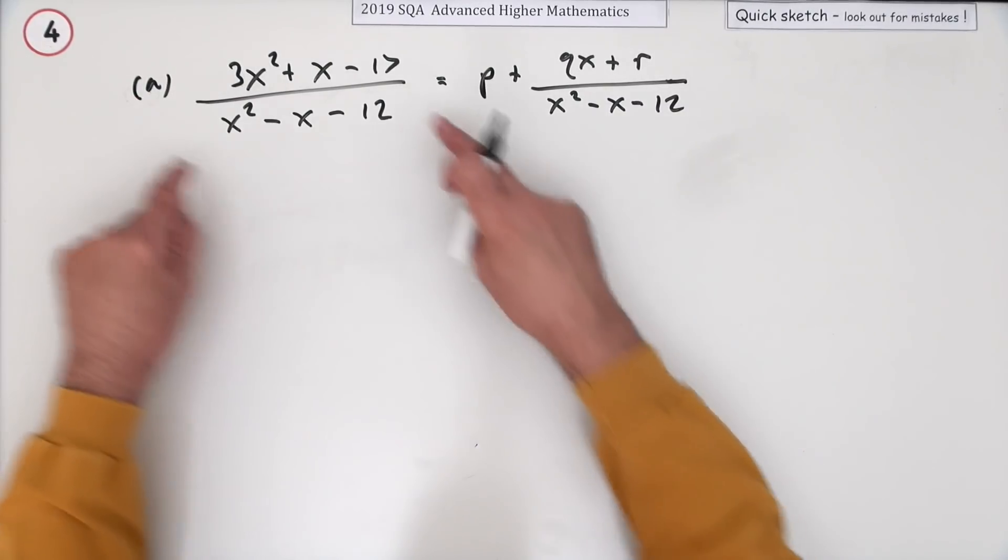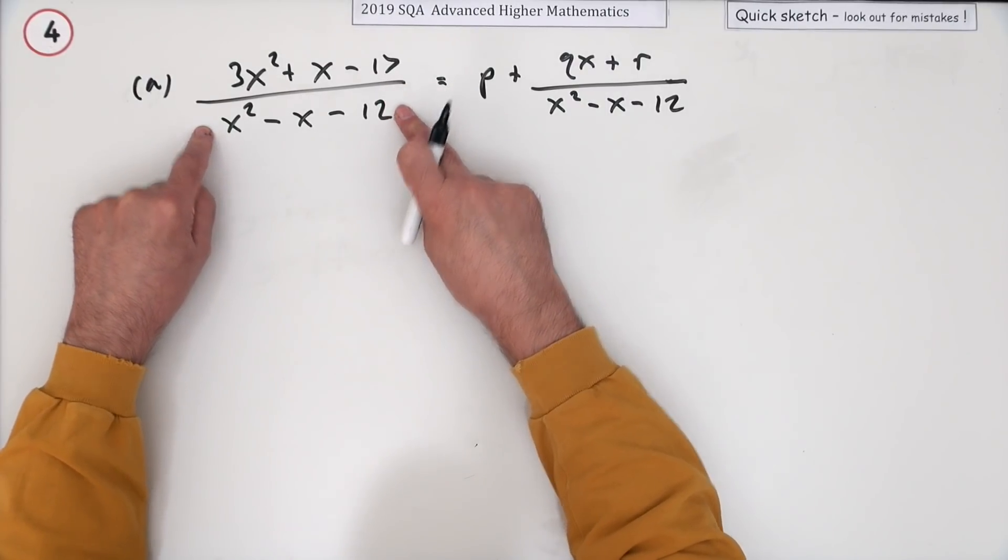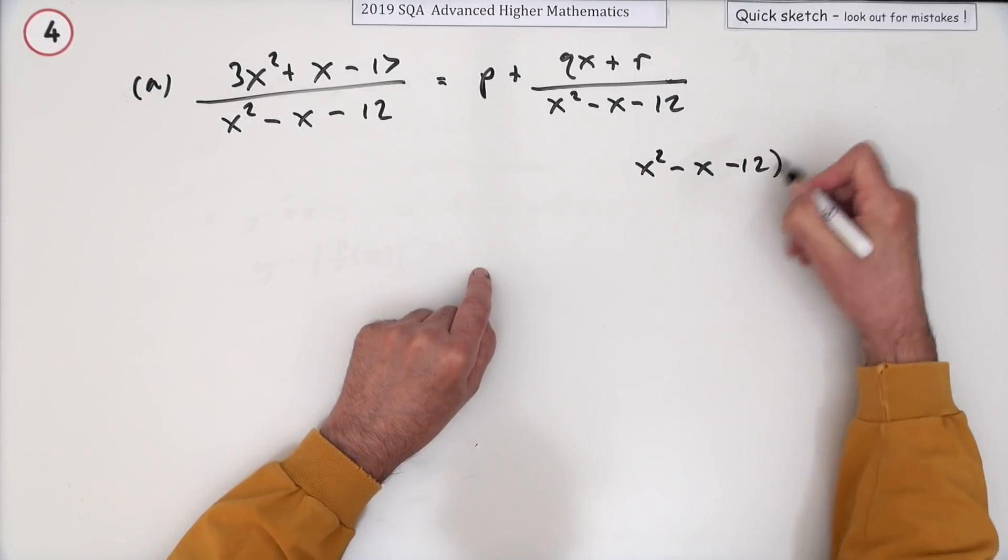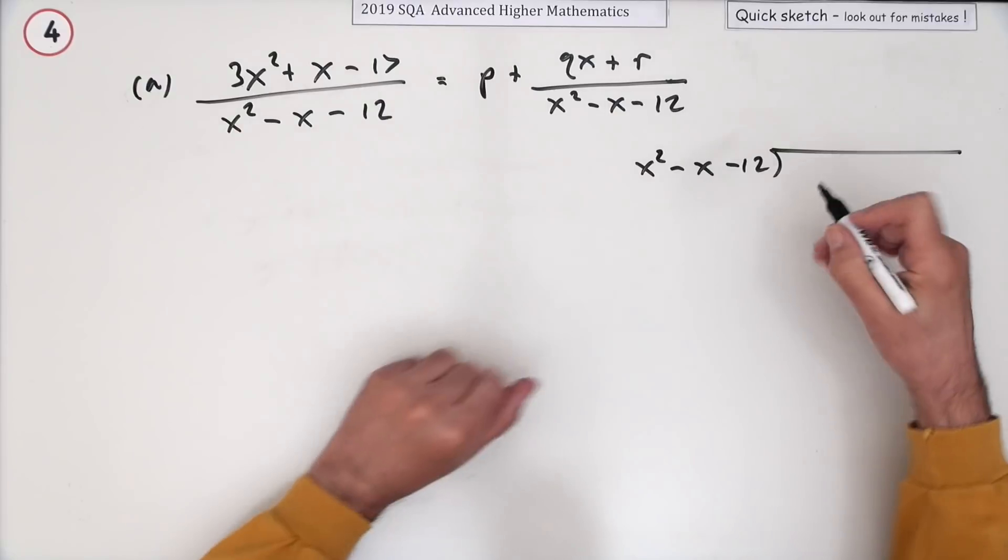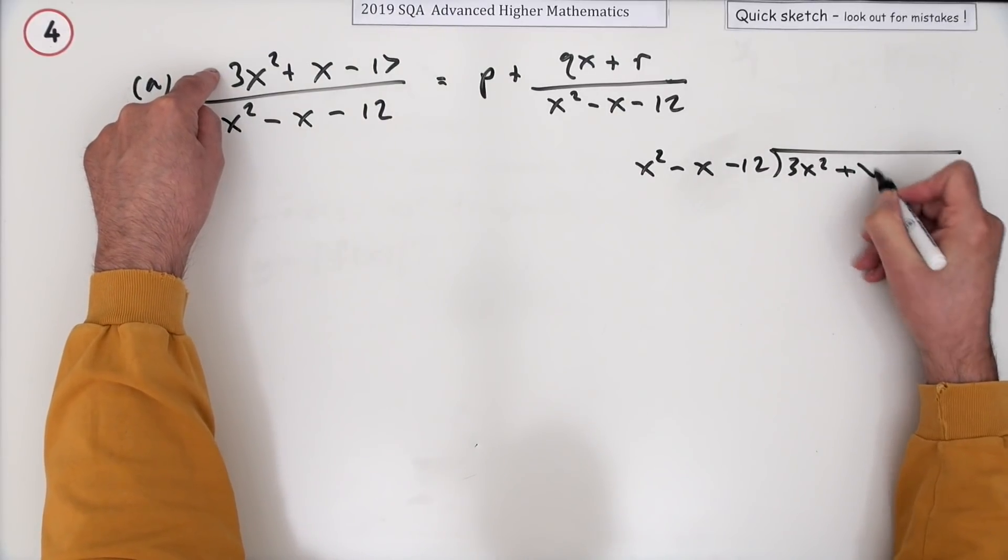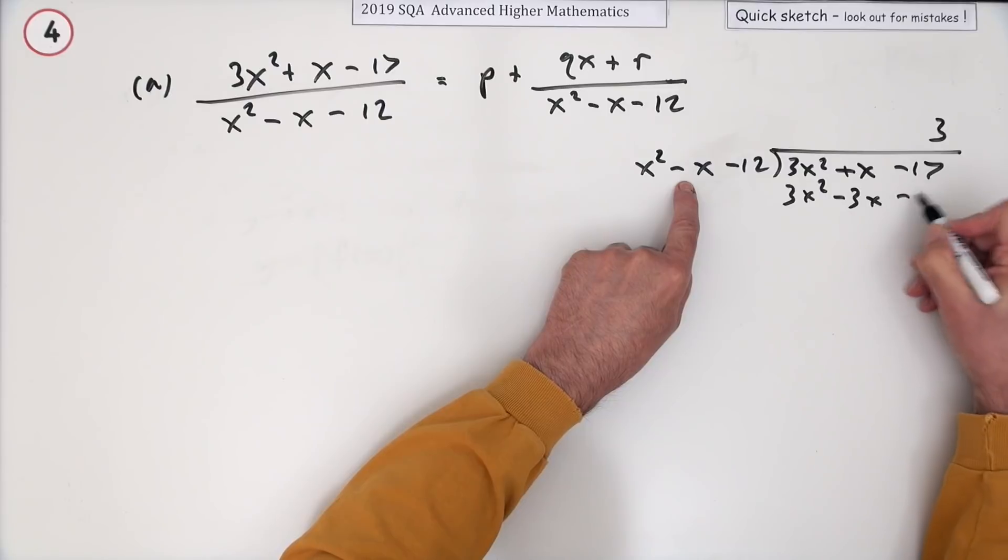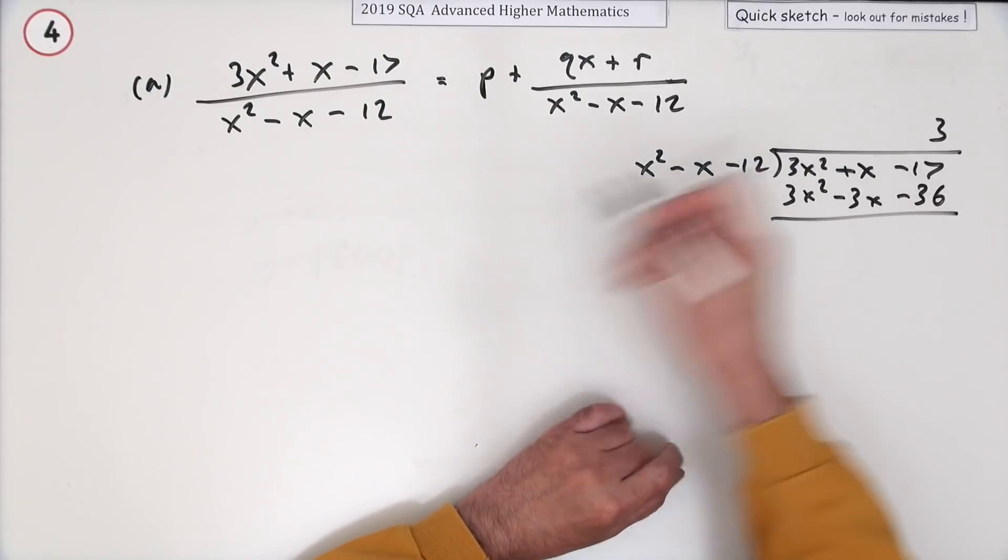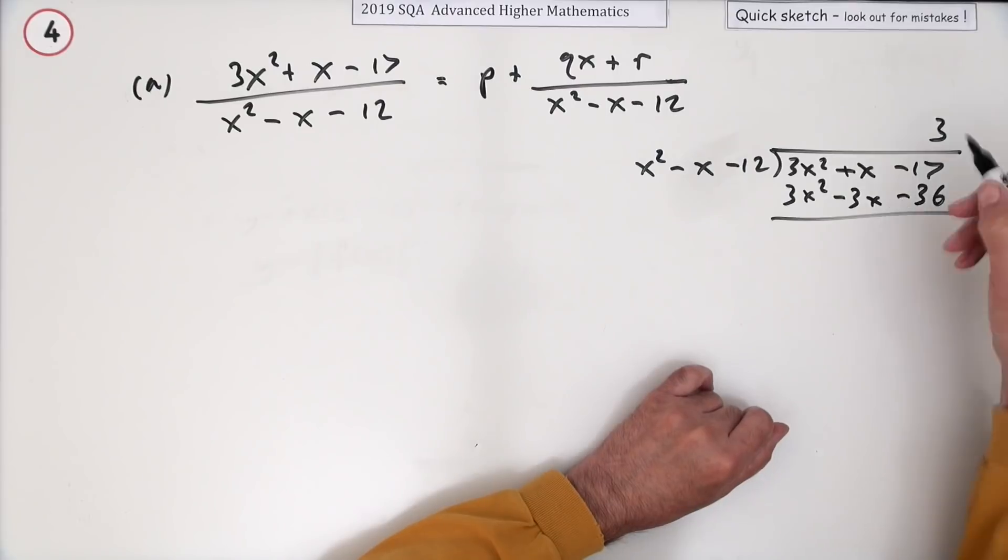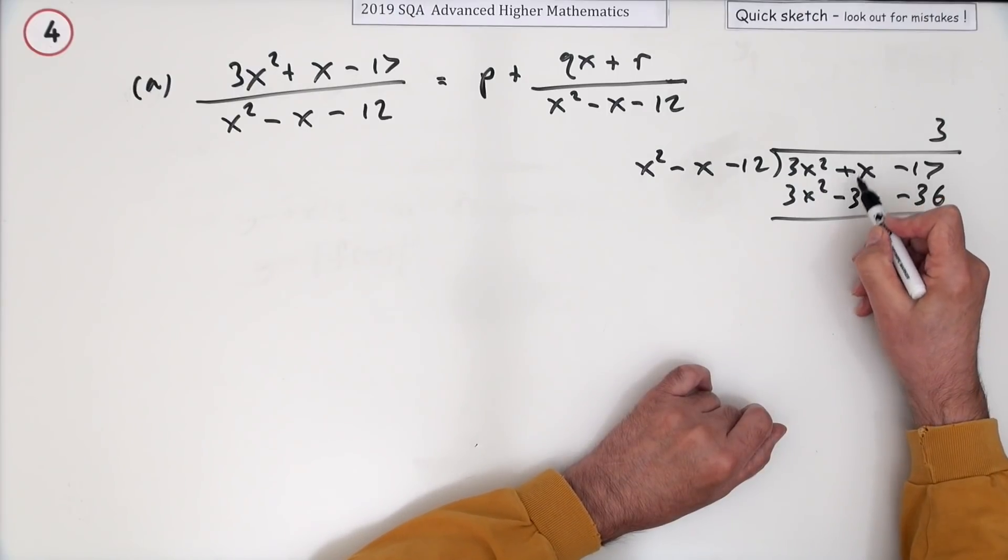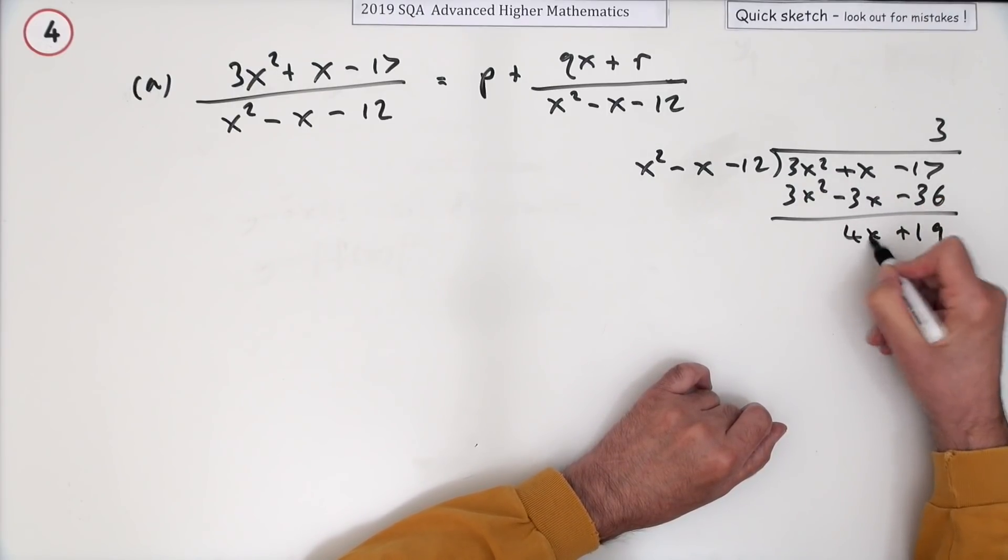Or just divide it in. x² - x seems maybe a little bit of mucking about, maybe getting some signs wrong, into 3x² + x - 17. Obviously goes three times, so it's 3x² - 3x - 36. So what would be left over? Subtract it carefully. Negative 17 take away negative 36 is negative 17 plus 36, which is a plus 19. 1 take away negative 3 is 1 plus 3, which is 4.